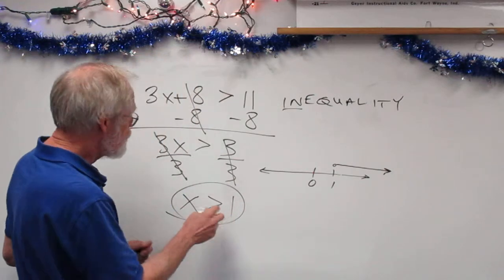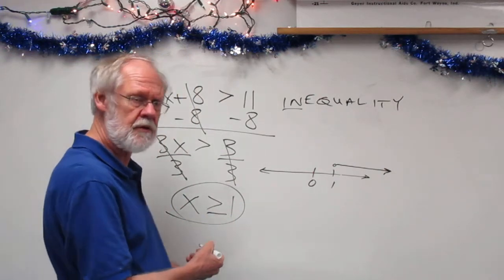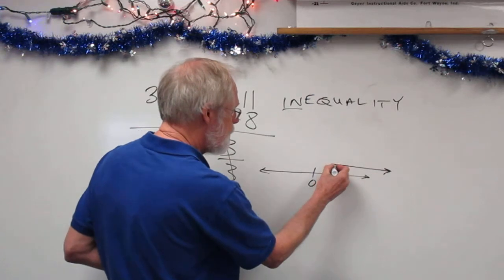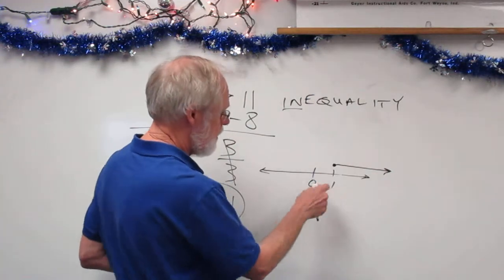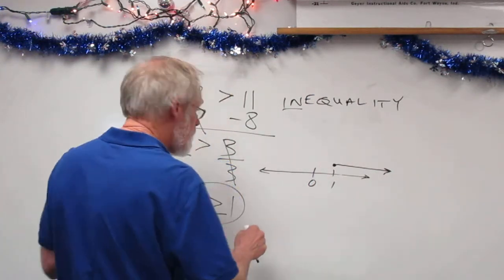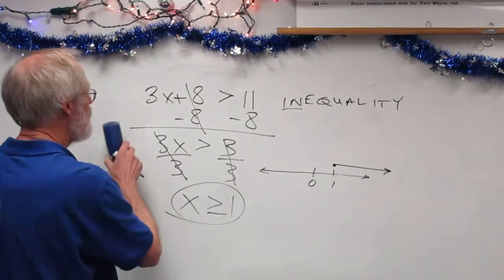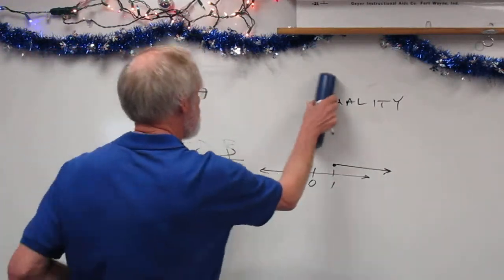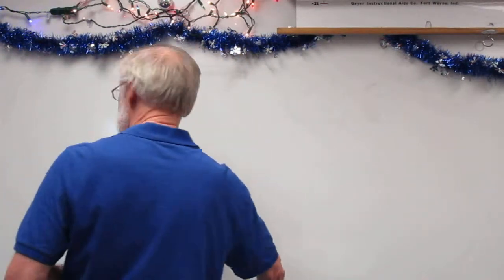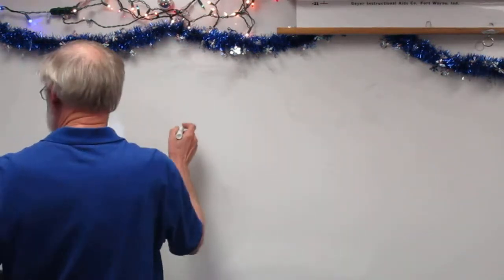If I change this so that x is greater than or equal to 1, then I would fill in the circle, indicating that 1 is a possible solution. We'll look at some more graphs in a moment, but let's try a couple that are a little more complicated.